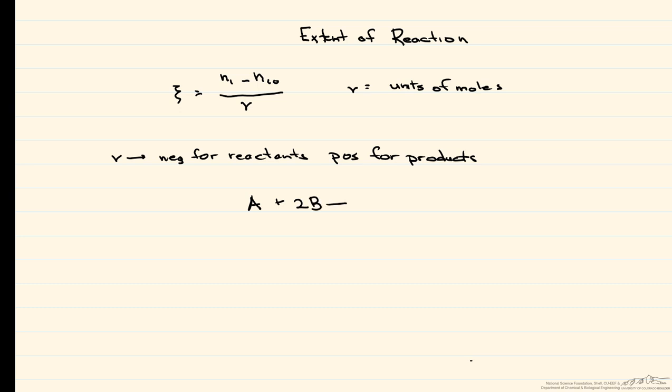Let's look at a simple example. A plus 2B goes to 3C. Let's say that coming into our reactor, we have 2 moles of A and 5 moles of B, and A is completely converted. Therefore, no moles of A are going to exit.